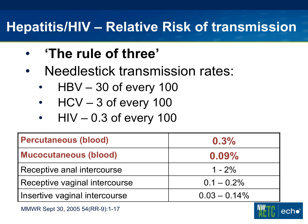To remember what the transmission risks are, we use something called the rule of three. If you line up hepatitis B, hepatitis C, and HIV, they're also in alphabetical order. It goes descending from a 30% risk to 3% to 0.3% risk in terms of needlestick transmission rates. Of course, these are just estimates from very limited data, but it's the best that we have.